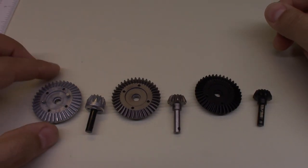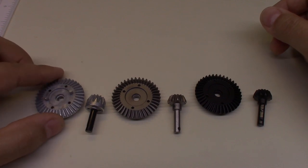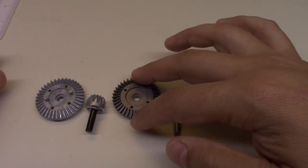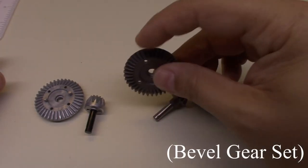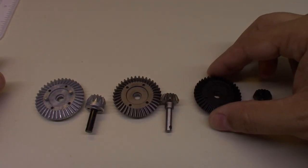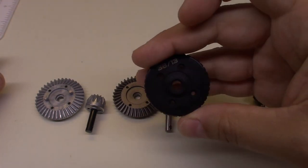The first one here we have is the stock ready-to-run gear set. The second one is the upgraded steel gear set from Axial, and the third one is the incision steel gear set from Vanquish.